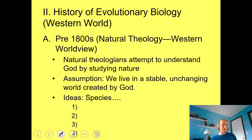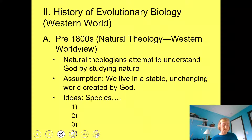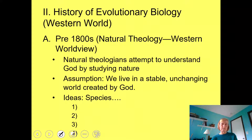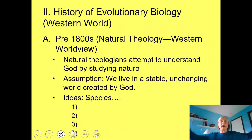Before the 1800s, natural theology was kind of the norm — the Western worldview. Natural theologians were people who attempted to understand God and all of God's wisdom by studying nature. The assumption was that God is a stable, unchanging God, and therefore we must live in a stable, unchanging world. That is the worldview by which people viewed everything prior to the 1800s.